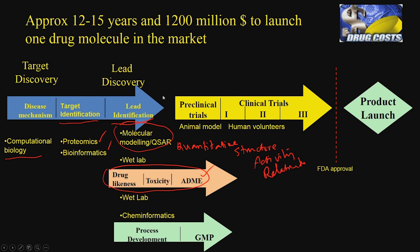Once a lead is identified, it goes through animal preclinical trials, then clinical trials phase 1, 2, and 3, then FDA approval, and finally gets launched. So this is the pipeline for new drug discovery. The course is going to cover the computational biology, proteomics, bioinformatics side, the molecular modeling, and the drug-likeness and ADME prediction — essentially how computers can be used for calculating some of these parameters.